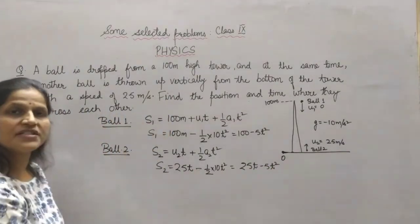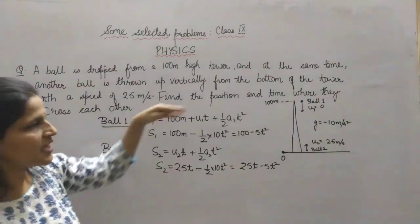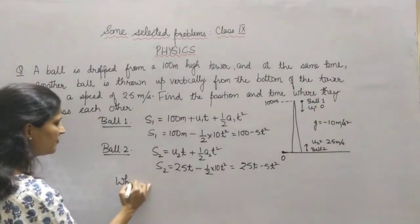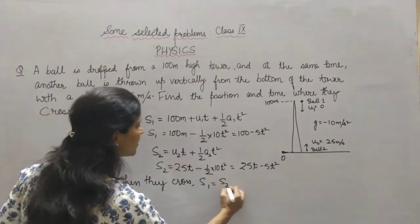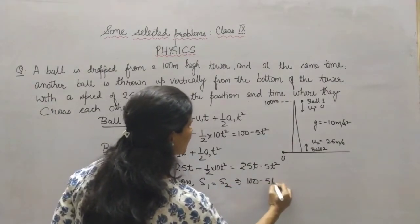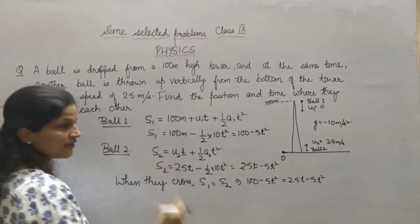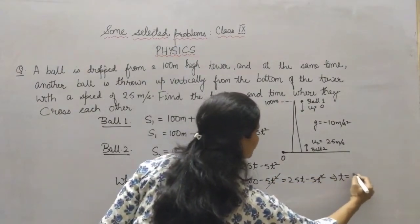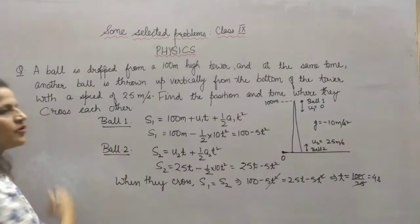When the two balls cross each other, S1 equals S2. Equating: 100 − 5t² = 25t − 5t². The 5t² terms cancel from both sides, giving 100 = 25t, so t = 100/25 = 4 seconds again. Both methods confirm that the balls cross each other at t = 4 seconds.